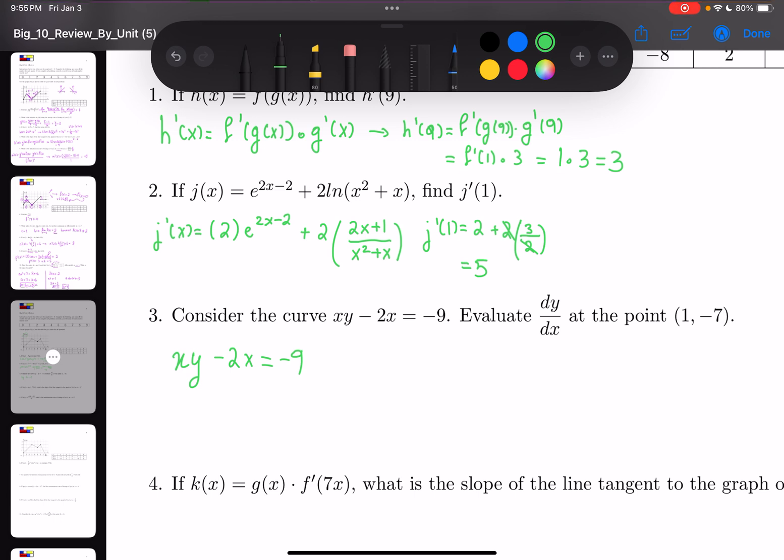So for xy you have to use product rule. u' is 1 (the derivative of x) times y, plus x times dy/dx, minus 2 equals the derivative of -9, which is 0.